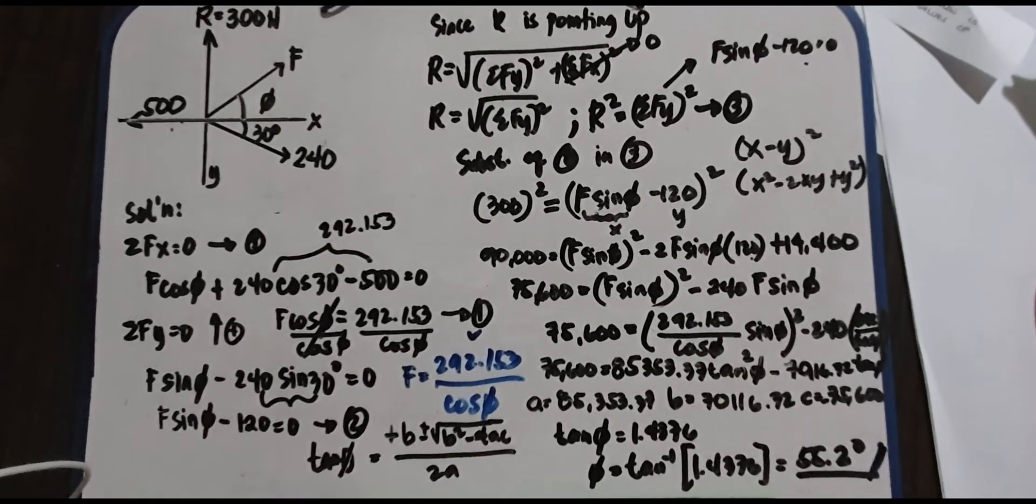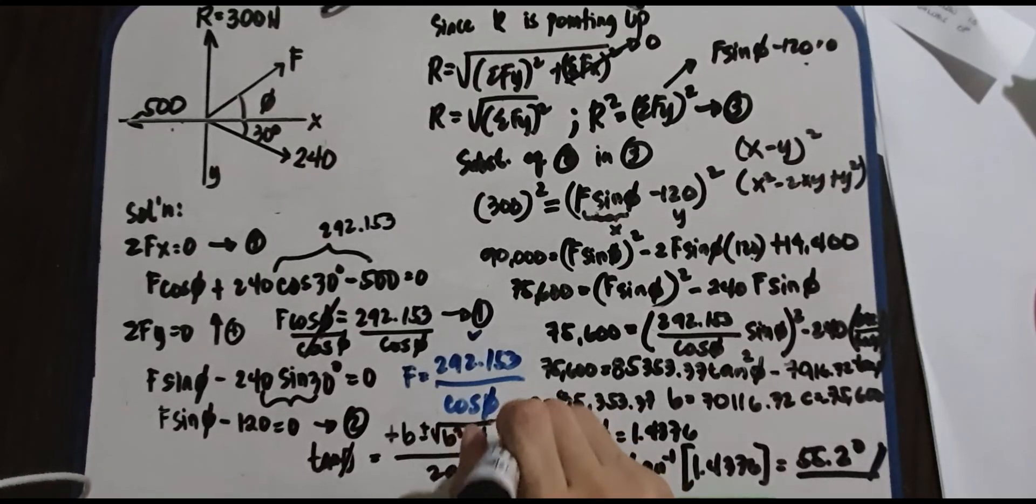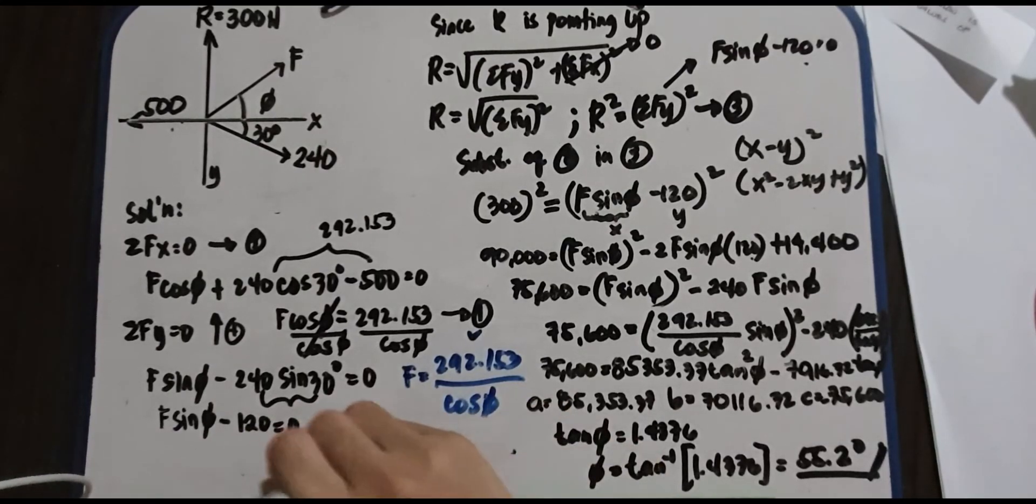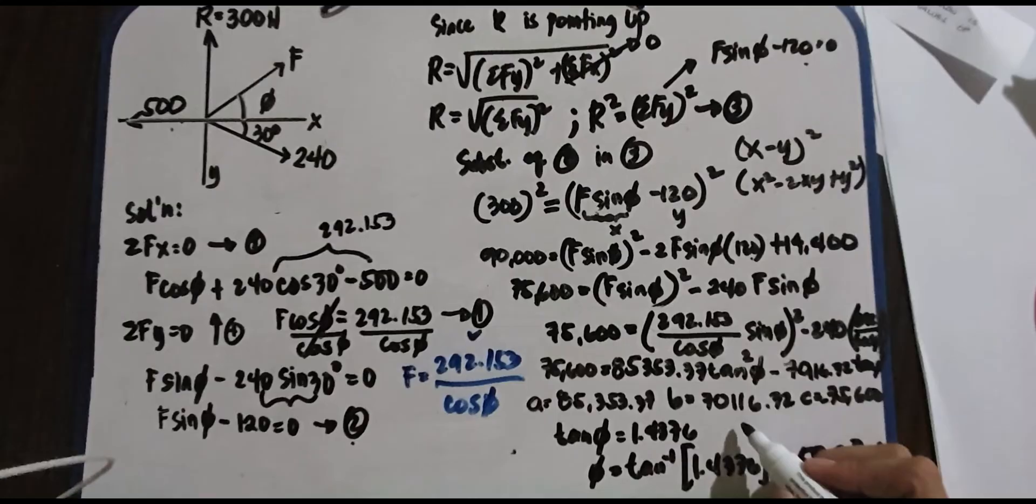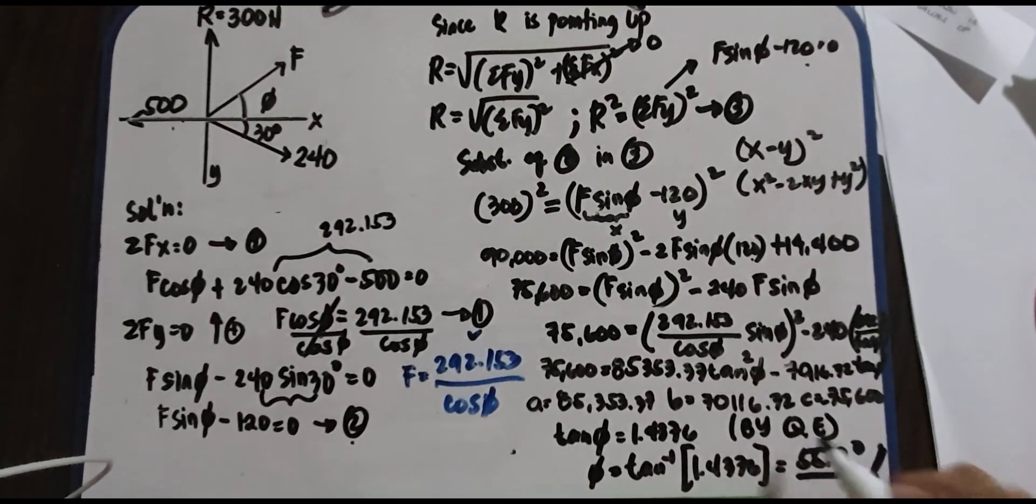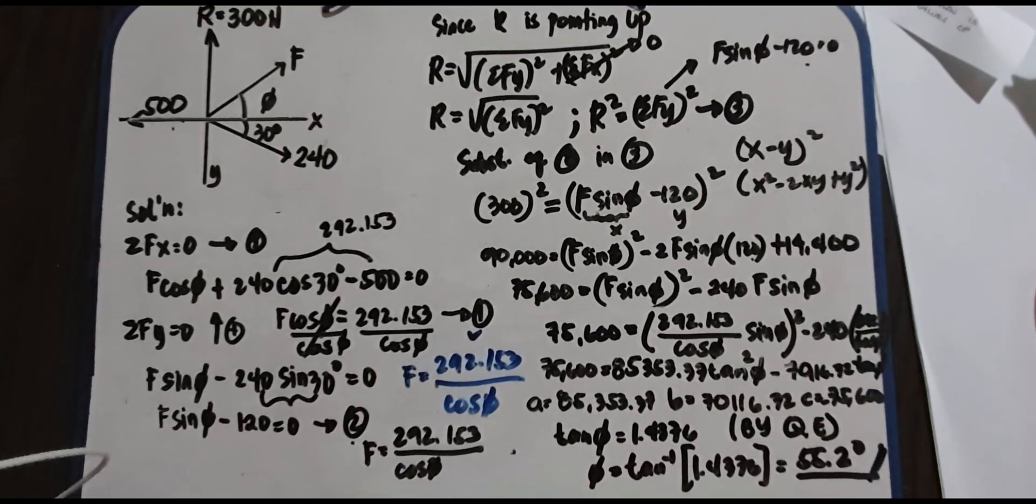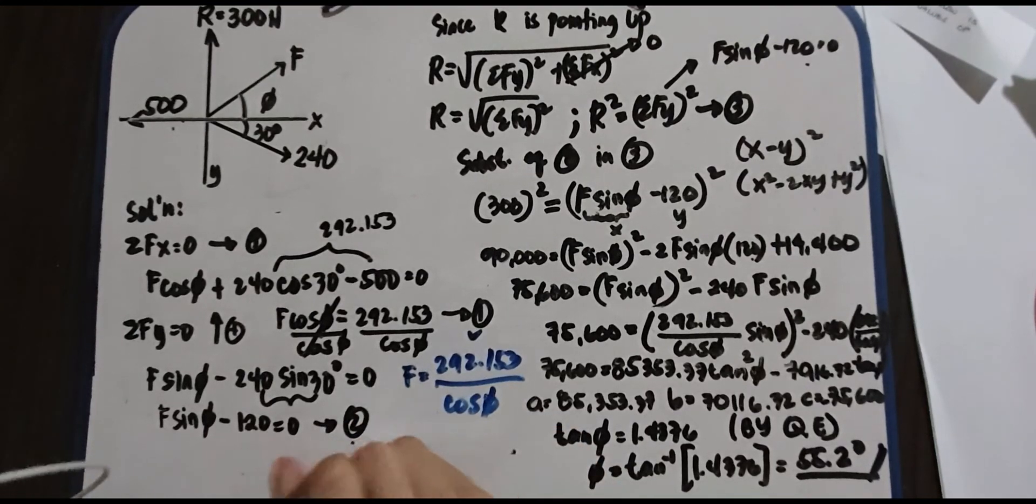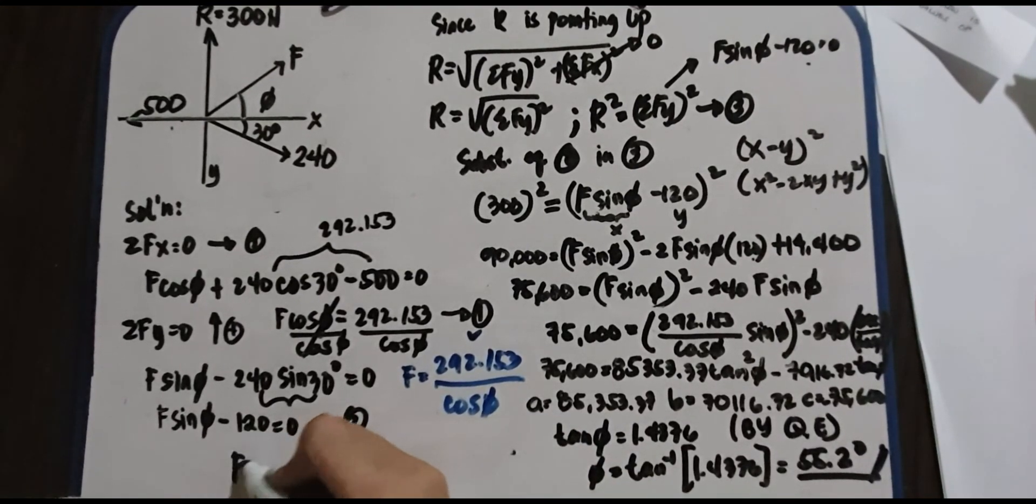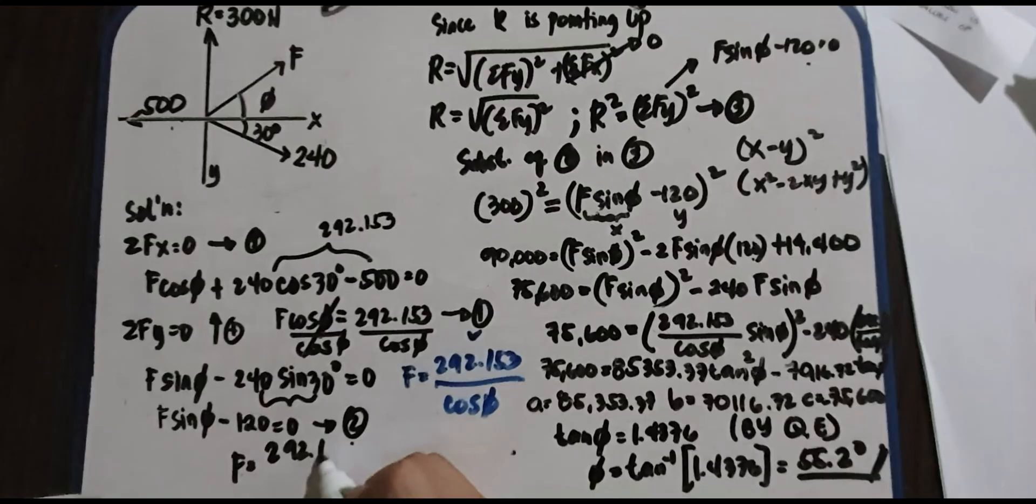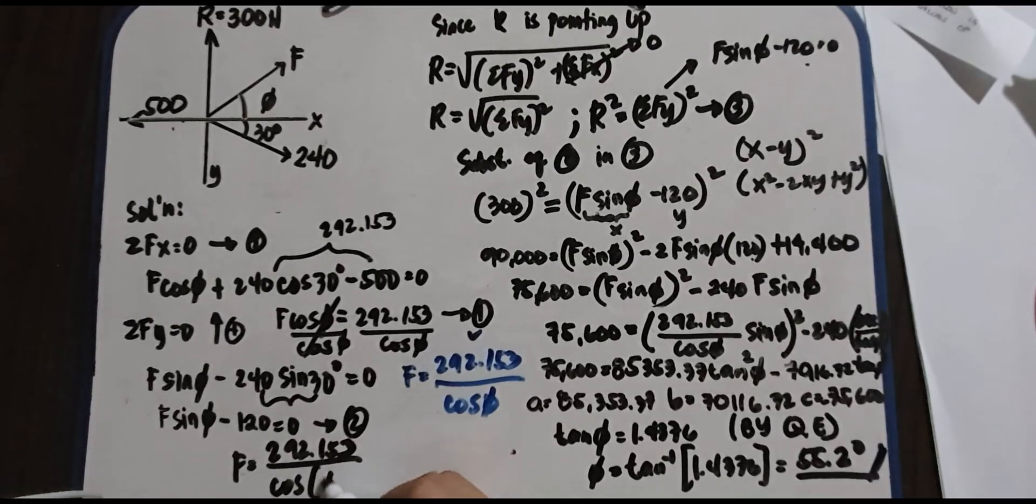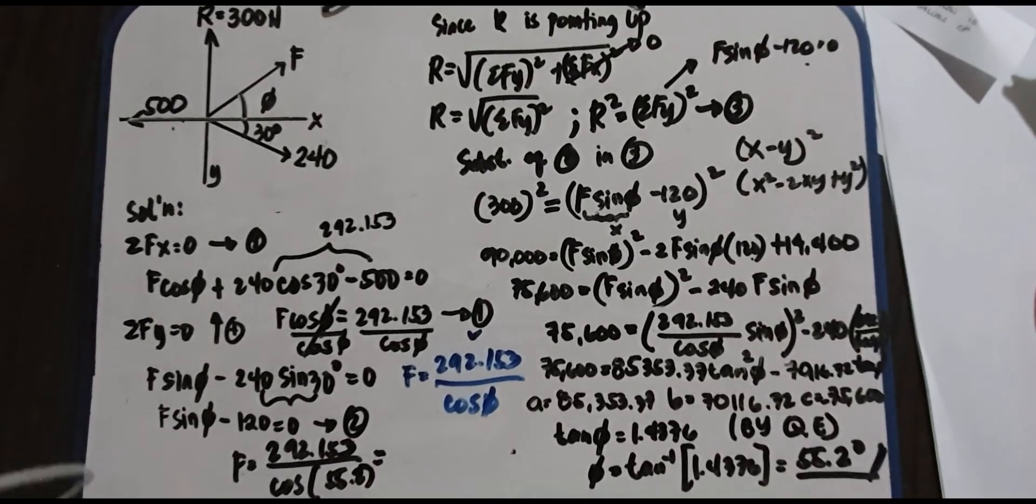Since we now have phi there, or the angle, let's put it in our formula F cosine phi. So how do we do that? Let's remove this. Let's put it here, result of quadratic equation. What is your F? 292.153 all over cosine of phi, which is your phi? What is the value of phi? We have 55.2. Let's put it here for completeness. 292.153 all over cosine of 55.2.